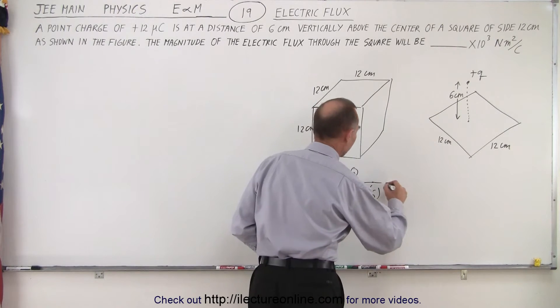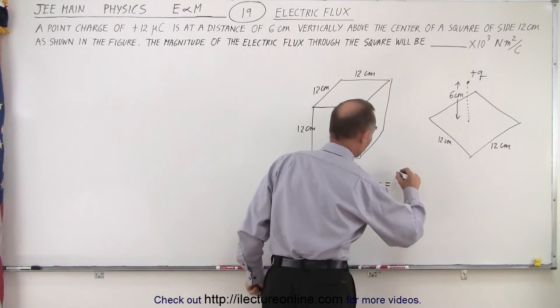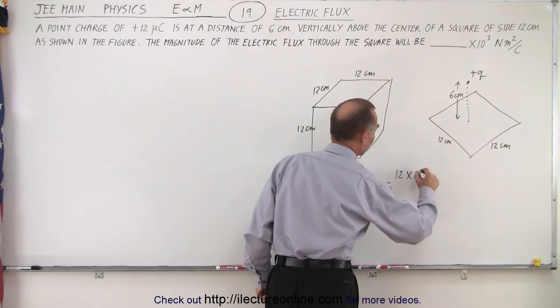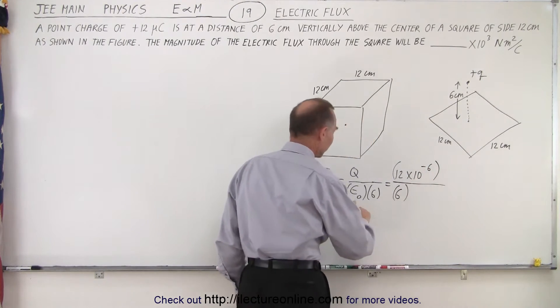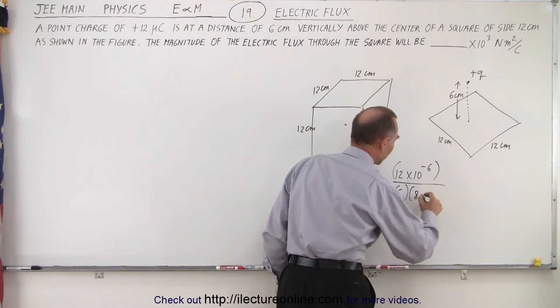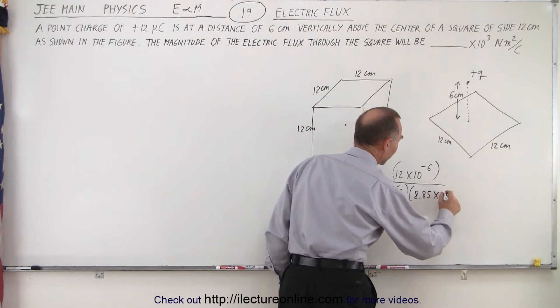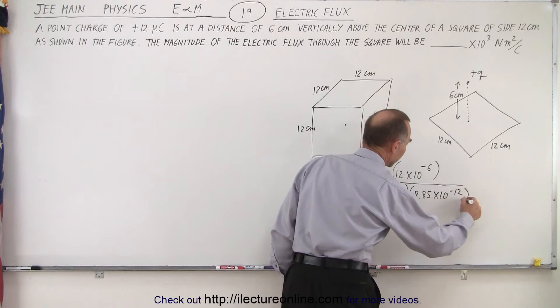All right, so the q is given. So that's equal to 12 microcoulombs. That's 12 times 10 to the minus 6 in the numerator. We divide it by 6. And then epsilon sub nought, that's 8.85 times 10 to the minus 12, like this.